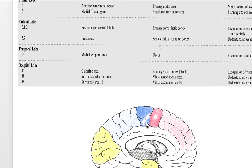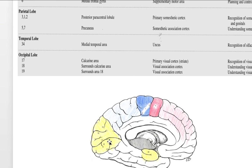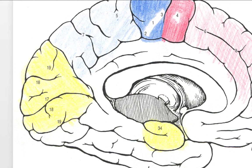On the medial surface, areas 3, 1, and 2 are the somatosensory cortex; area 4 is the motor cortex; areas 5 and 7 are the somatosensory association cortex. Among the most interesting regions on the medial portion are areas 19, 18, and 17, reflected along the calcarine sulcus, which is part of the primary visual cortex. Our retinas are projected topographically onto the back of our brains in this region. Finally, we have the uncus here for olfactory stimuli.